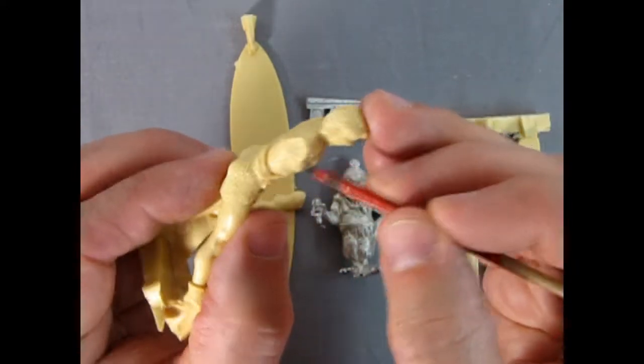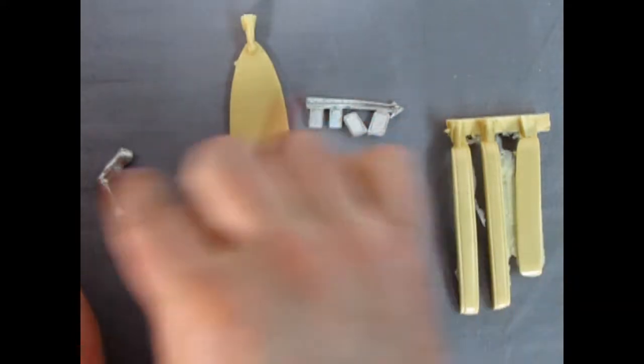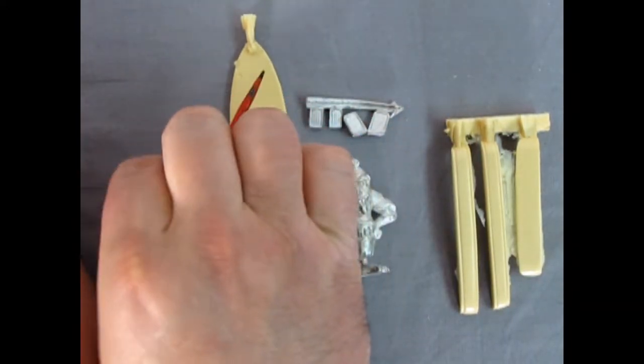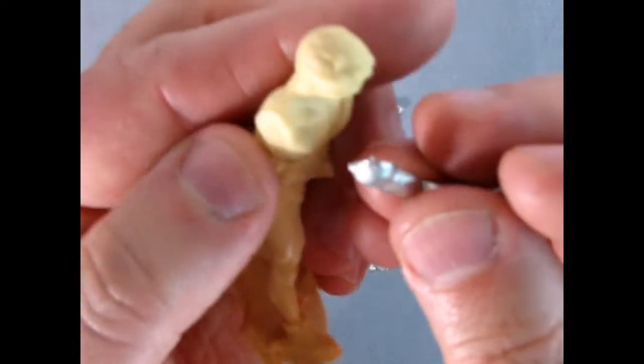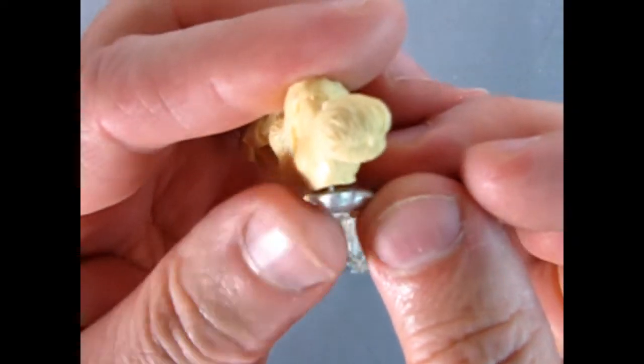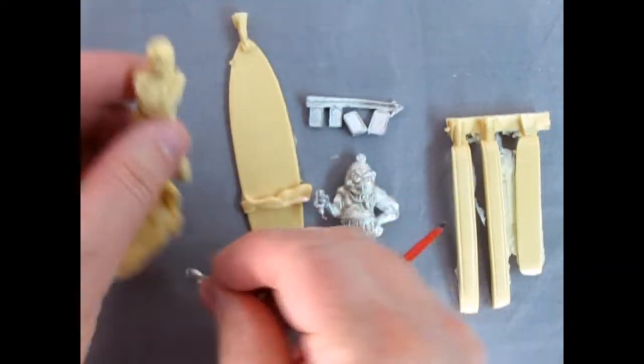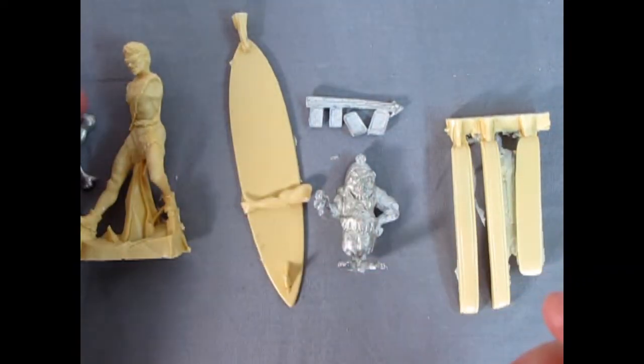But you will have to flatten out those arm areas and on the back of these arms, just so that it's nice and flat and flush when you actually glue the arms on. And what you use to glue resin is basic crazy glue.